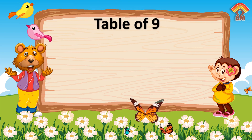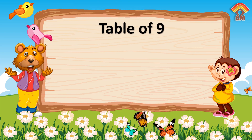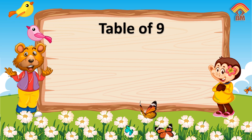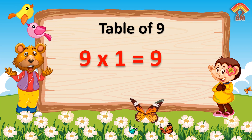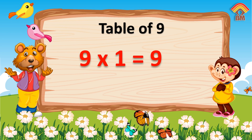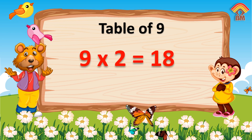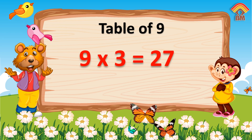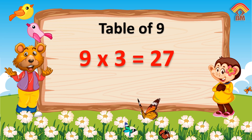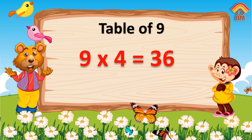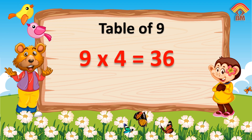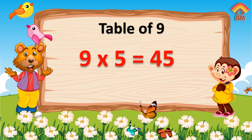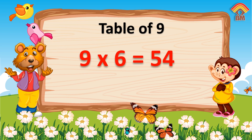Table of Nine. Nine ones are nine. Nine twos are eighteen. Nine threes are twenty-seven. Nine fours are thirty-six.